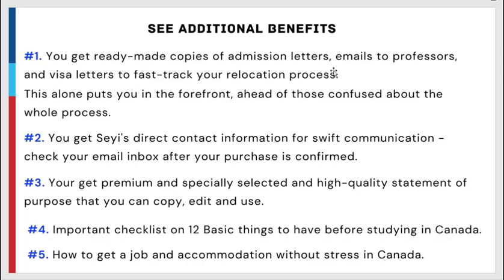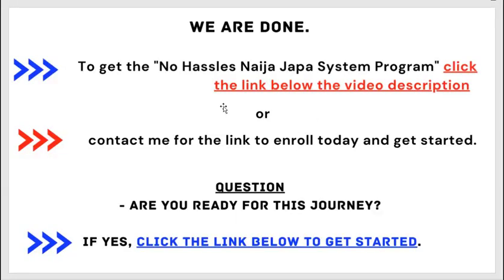Apart from all the benefits already listed, here are more you will get. Number one: ready-made copies of admission letters, emails to professors, and visa letters to fast-track your relocation process. Number two: direct contact information for Chi for swift communication — check your email inbox after your purchase is confirmed. Number three: premium, specially selected, high-quality statement of purpose templates you can copy, edit, and use. Number four: an important checklist of 12 things to have before studying in Canada.